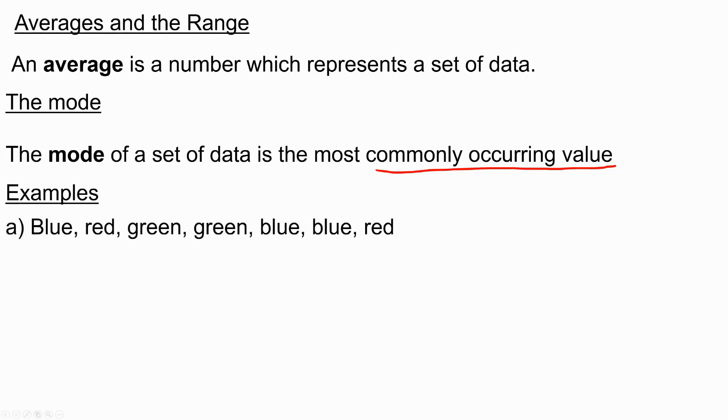For example, if we look at this list of colours, the colour that comes up the most is blue, because it comes up three times, whereas all the other colours come up twice. So it comes up the most, it is the mode. We also call this the modal colour.